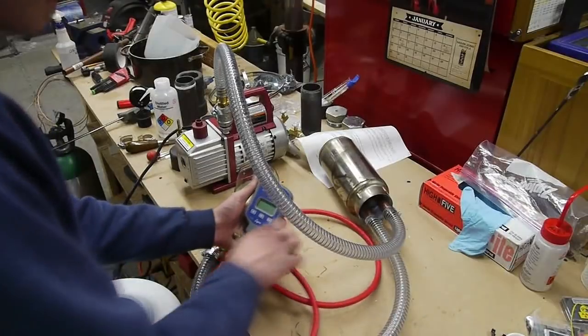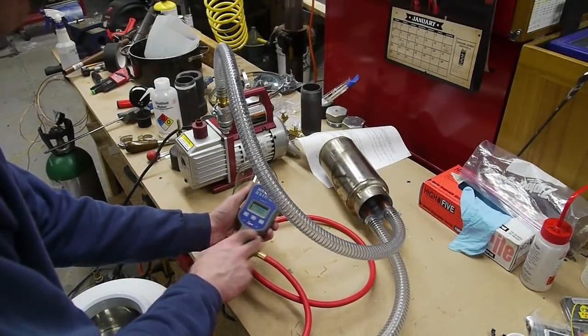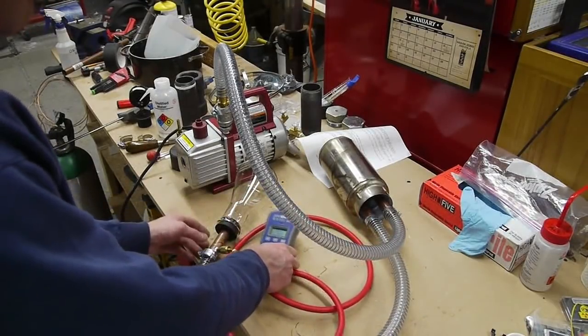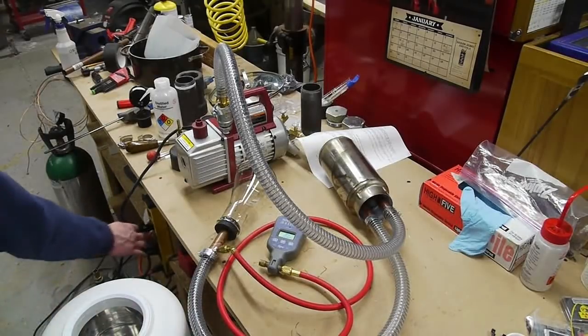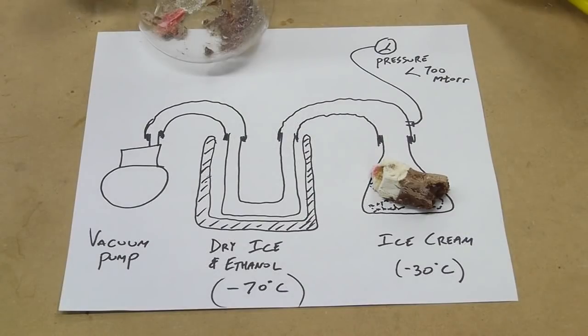The trick is that the line going to the pressure gauge can be quite small in diameter because it's not really flowing anything. The line from the cold trap to the chamber must be quite large to make sure that enough water flows through there, even at these low pressures.